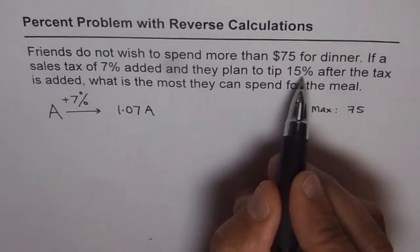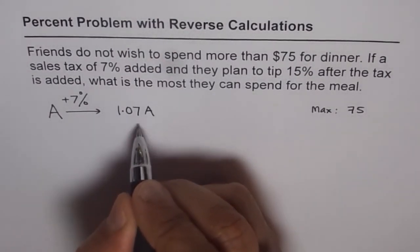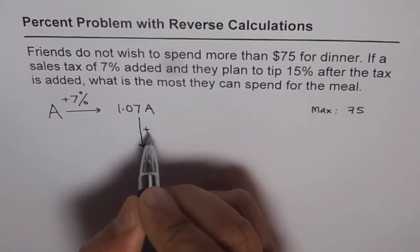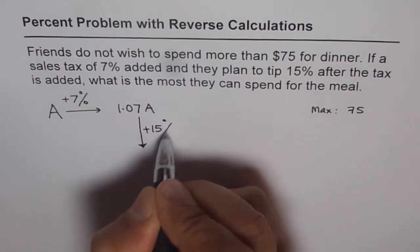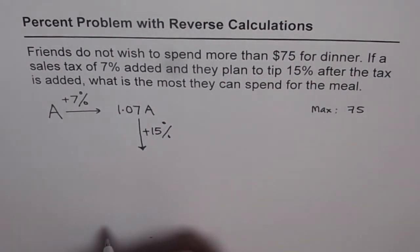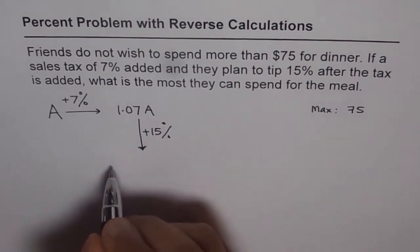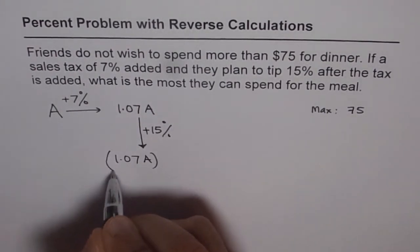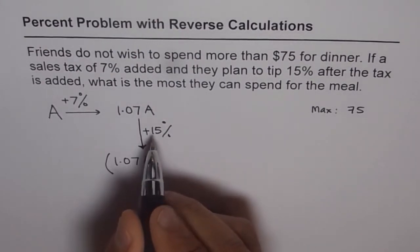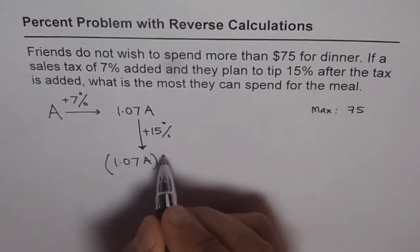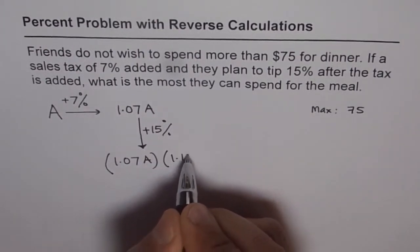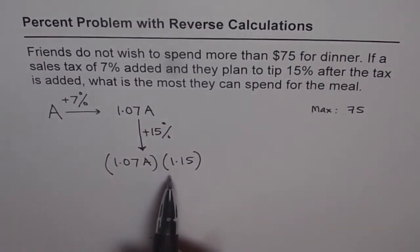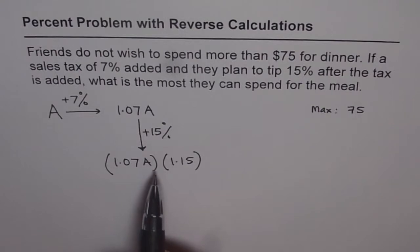Now let us add 15% to it. If you add 15%, what will happen? 1.07A is now the original amount, and adding 15% means multiplying by 1.15. So it becomes 1.07A times 1.15 — that will be the total amount after adding the 15% tip.